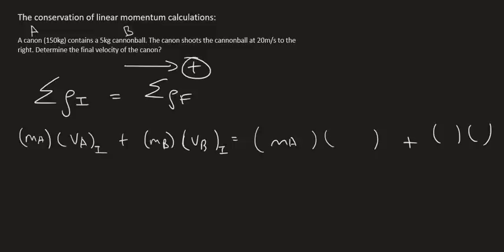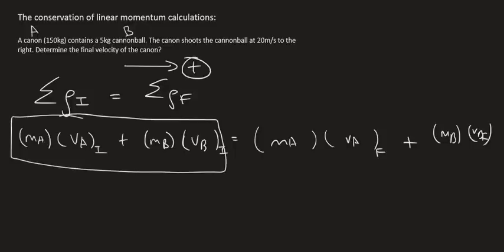This part by now you guys should get. Velocity of A final, and then mass of B, velocity of B final. Many teachers would combine these into one due to the fact that the mass of the cannon and the cannonball can be added because they are together in the beginning. But you don't have to do that. So if your teacher does that, don't stress, I'm correct and so are they.